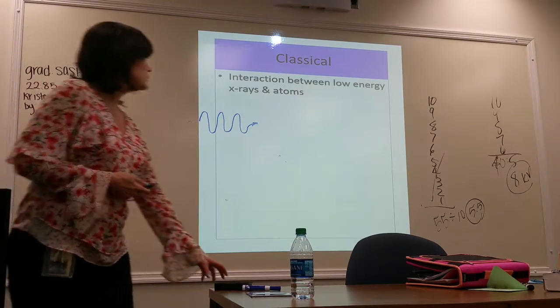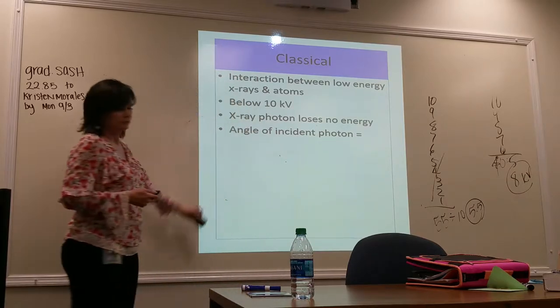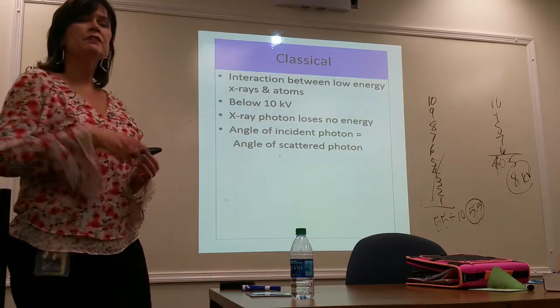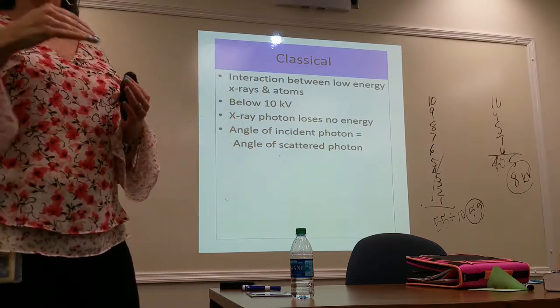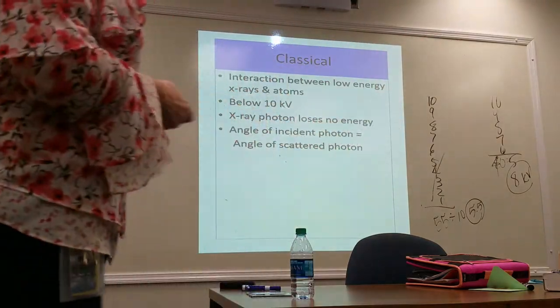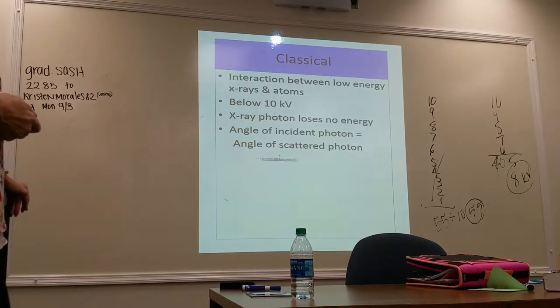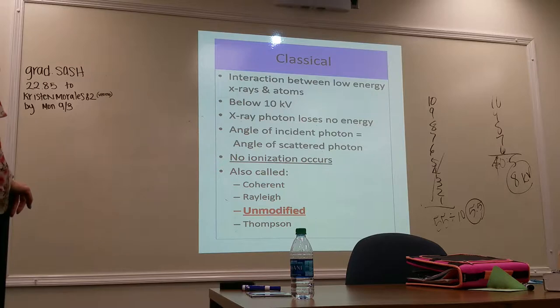I'll just have a summary. The angle of the incident photon, the X-ray photon coming into the atom at a 45-degree angle will scatter at a 45-degree angle. No ionization occurs. Unmodified describes it best, but I was used to coherent. It's also called classical.